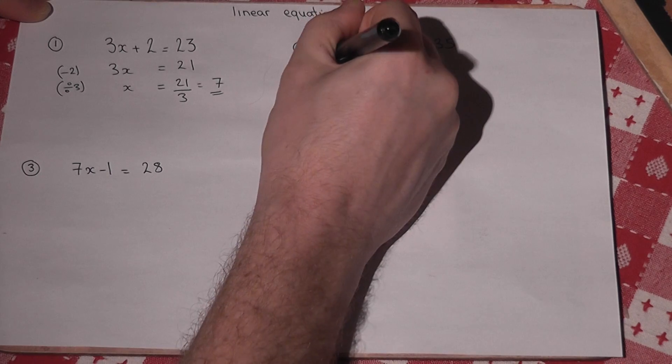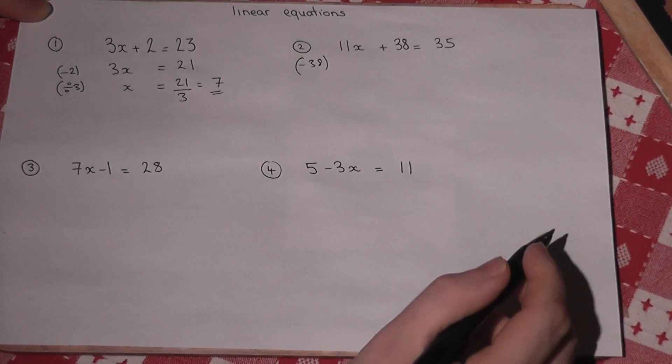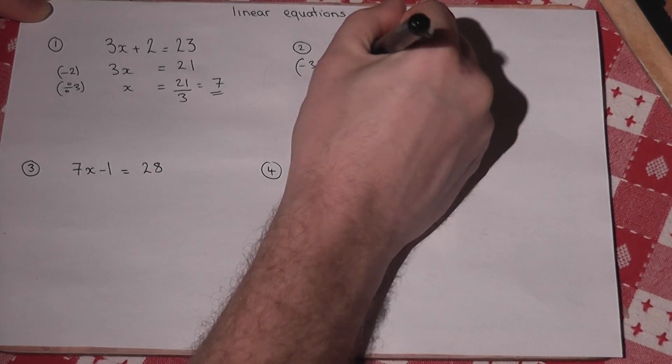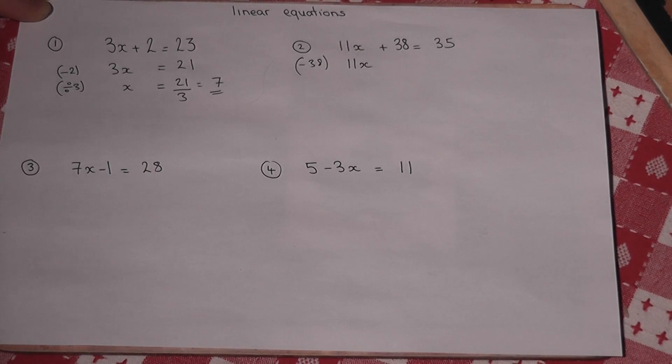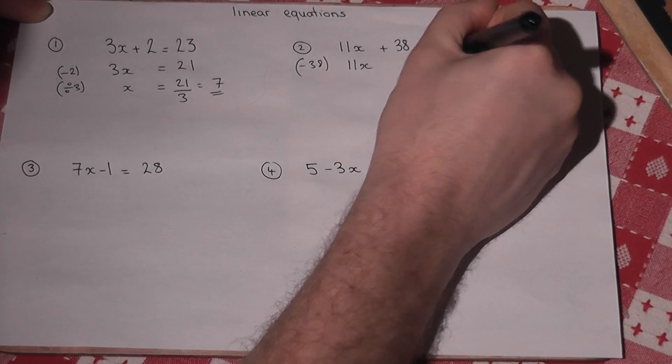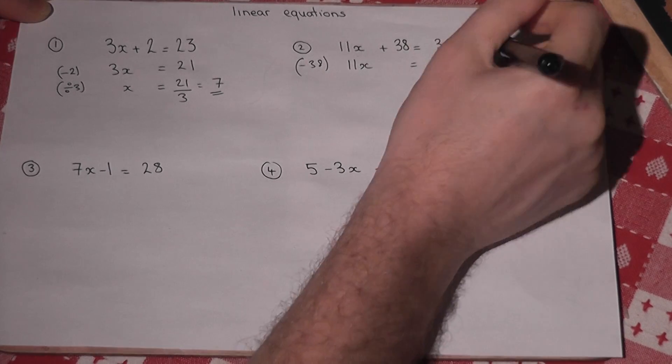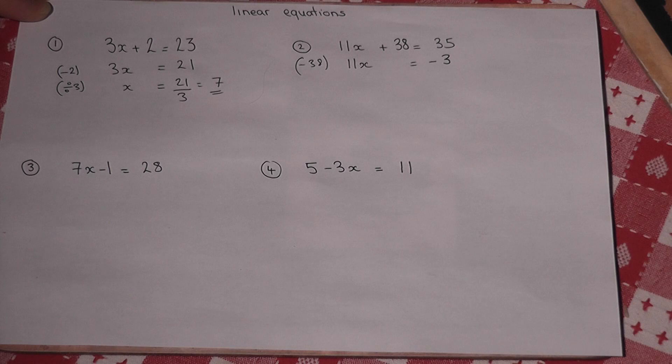So if I take away 38 I'm left with 11x on the left hand side but 35 take away 38 is actually minus 3. We are allowed negative solutions.